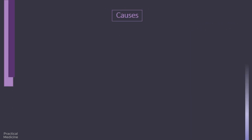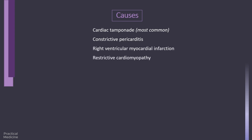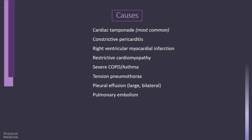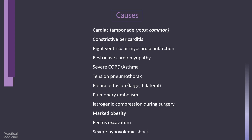Now let's see which conditions can cause pulsus paradoxus. Cardiac tamponade is the most common cause. Other causes include constrictive pericarditis, non-pericardial cardiac diseases such as right ventricular myocardial infarction and restrictive cardiomyopathy. Additionally, pulmonary diseases like severe COPD, asthma, tension pneumothorax, large bilateral pleural effusion, and pulmonary embolism can lead to pulsus paradoxus. Other causes include any condition resulting in cardiac compression, such as iatrogenic compression during surgery, marked obesity, and pectus excavatum. Finally, pulsus paradoxus may also manifest secondary to severe hypovolemic shock.